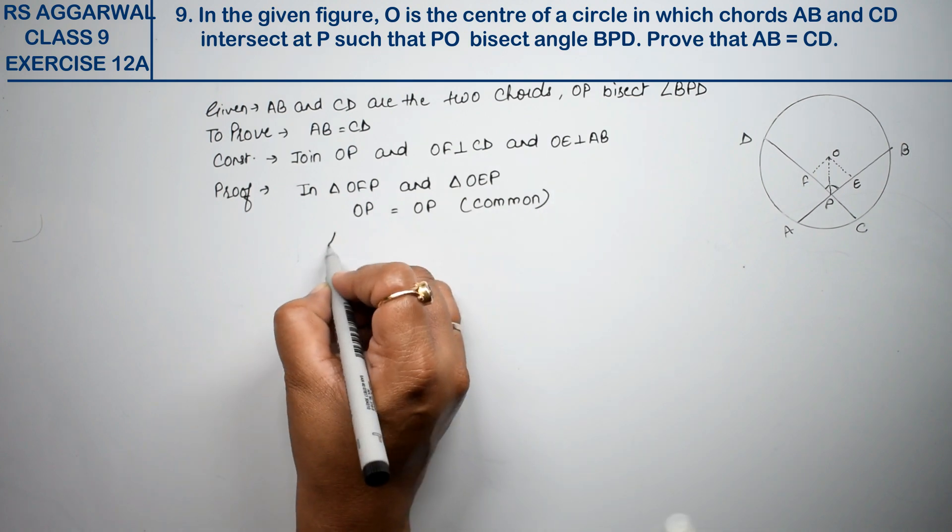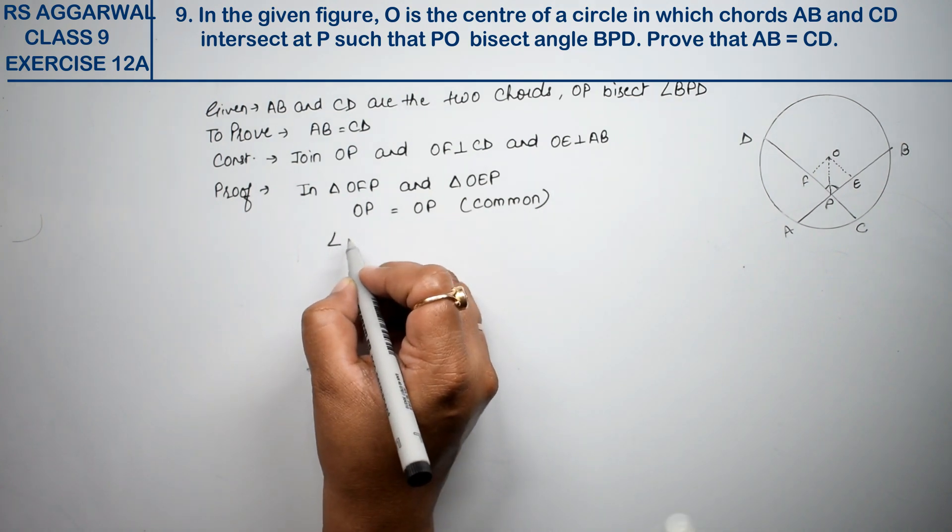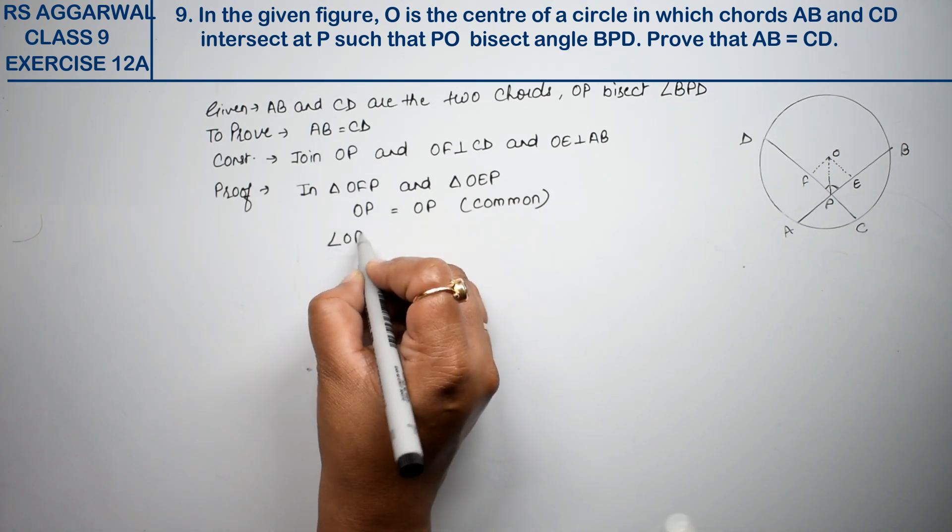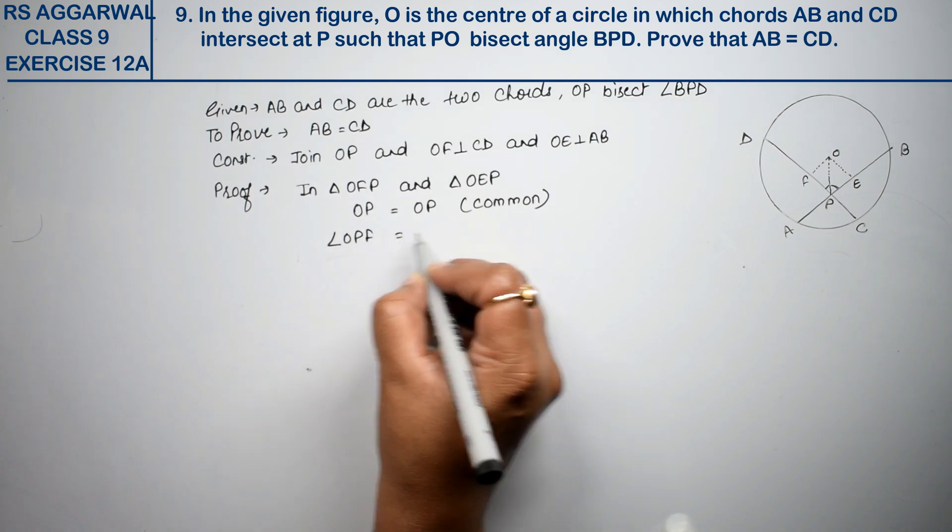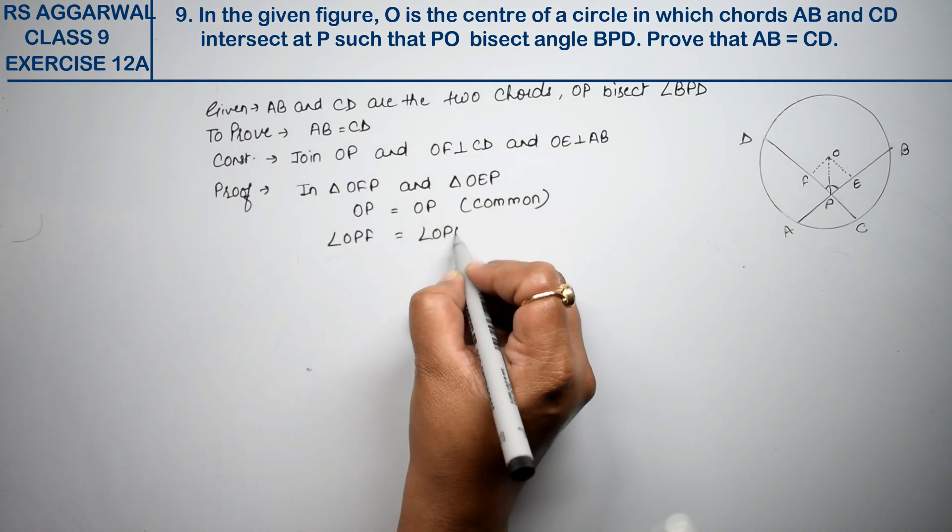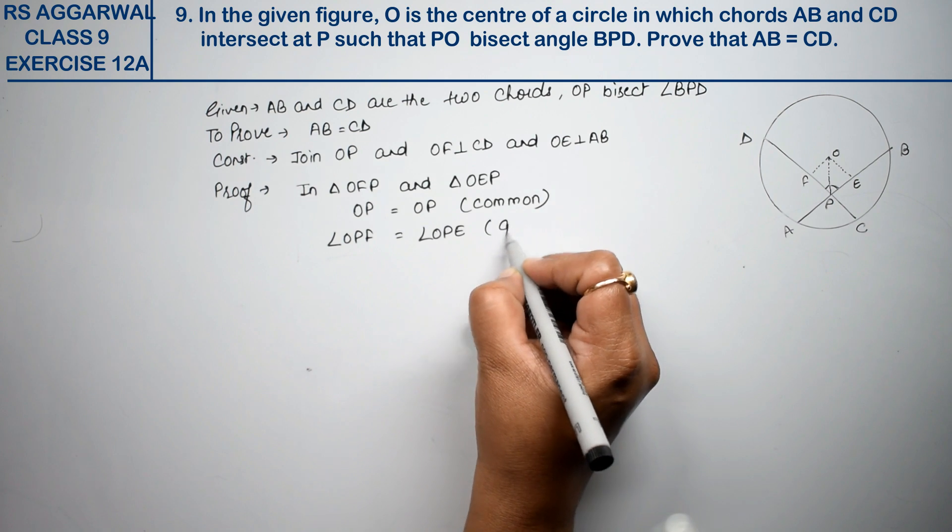What does OP do? It bisects angle BPD. So angle OPF is equal to angle OPE, given.